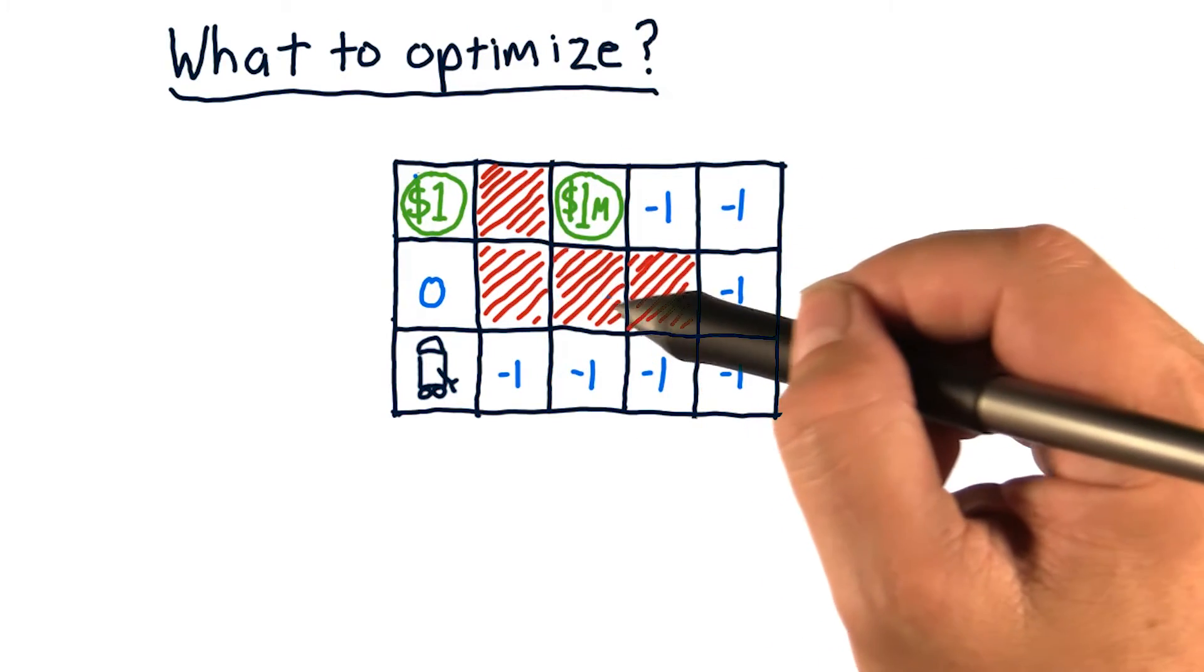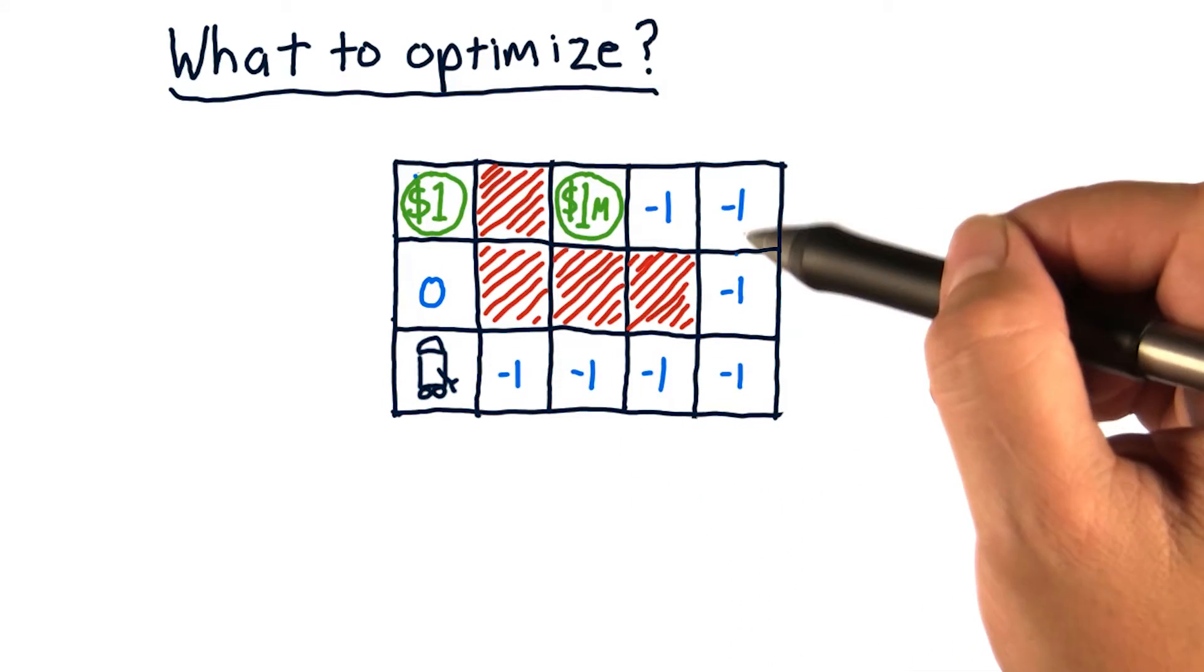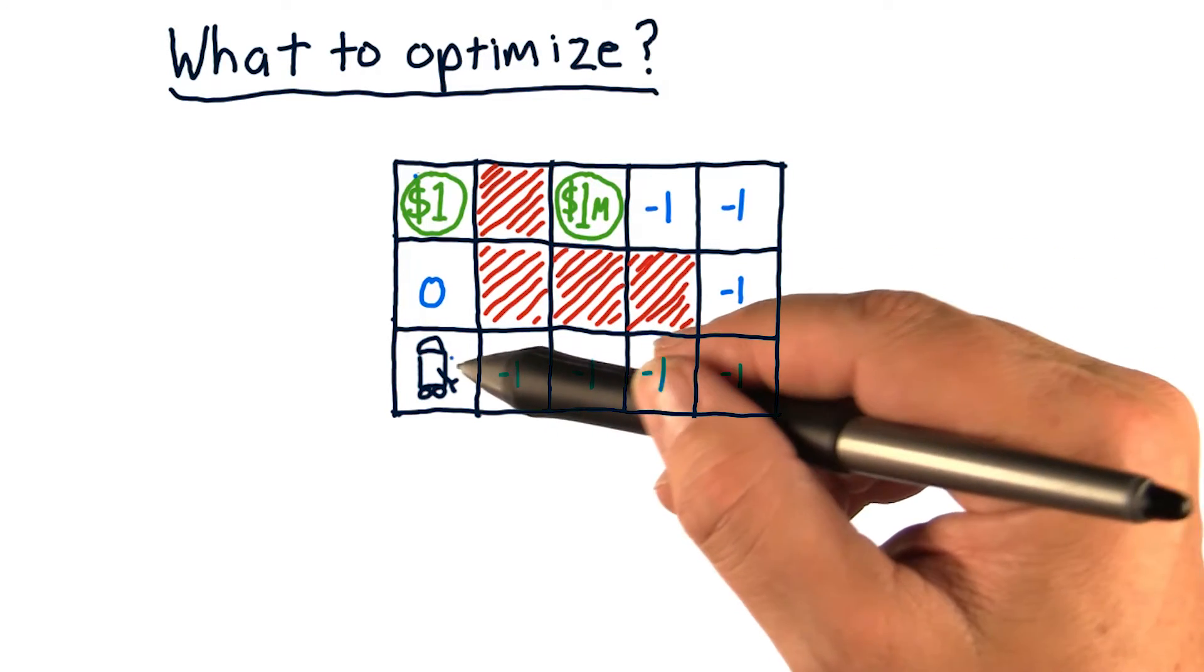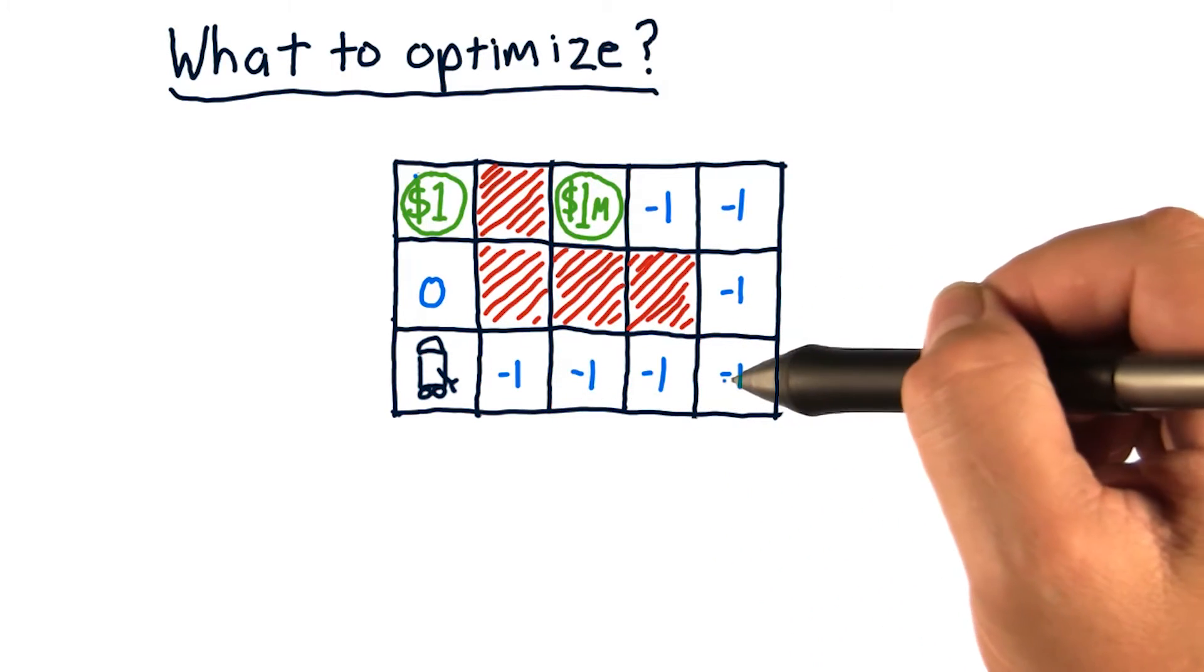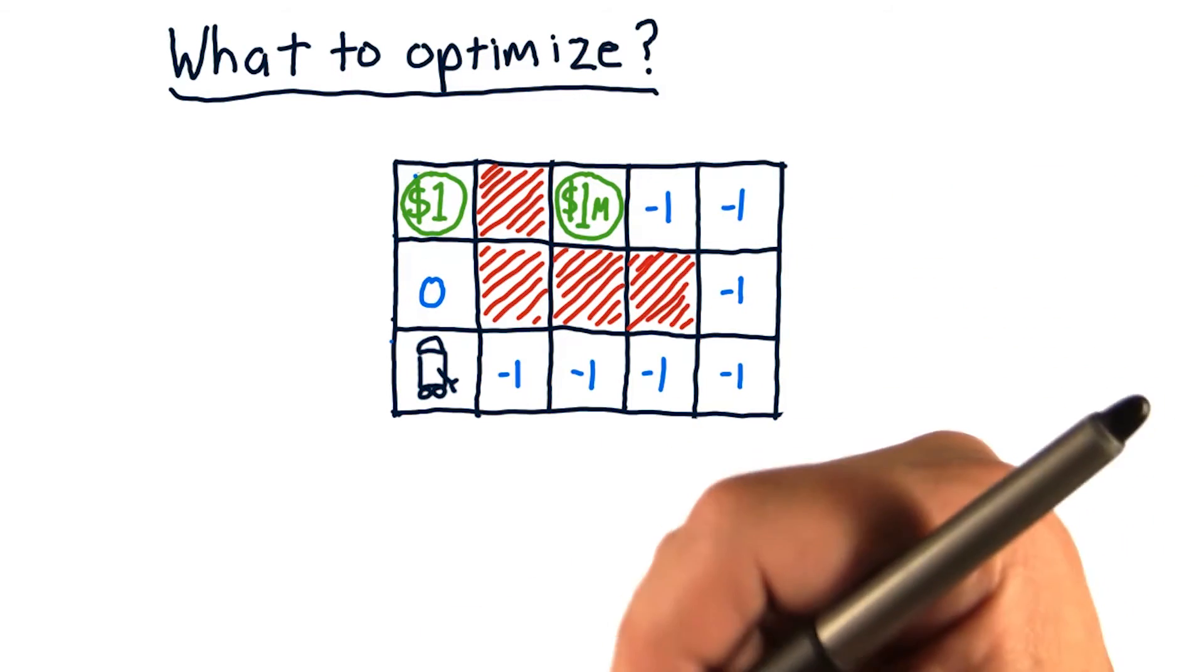Now this red area is obstacle, it can't go there. And here I wrote some rewards that the robot, and in fact negative one is a penalty, but the penalties the robot would get as it went this way, and zero penalty that way.